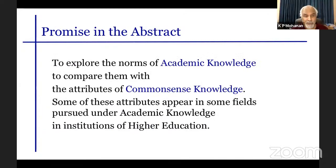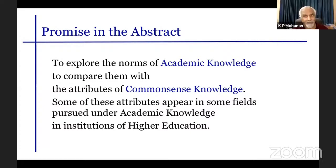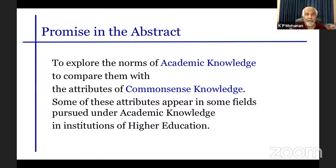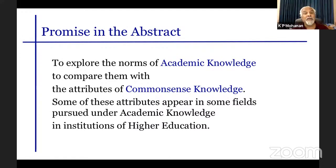We are going to explore the norms of academic knowledge. When we say academic knowledge, it includes mathematics, physics, biology, chemistry, sociology, philosophy, literary studies — all things taught in universities. We compare them with the attributes of common sense knowledge. The point is that some attributes of common sense knowledge creep into academic knowledge, so different fields of academic knowledge are not completely pure; some of the norms are not necessarily observed.